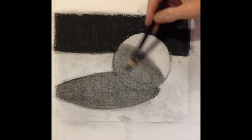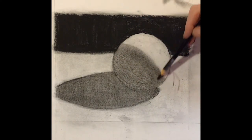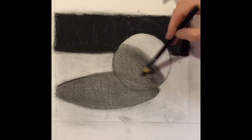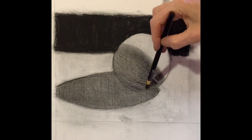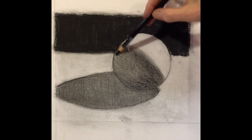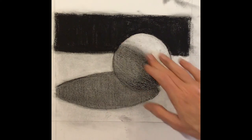So now I'm refining the shadows. I want to add that core shadow in. I want to leave some reflected light in there. Reflected light really adds a lot to the feeling of three dimensionality of the form.